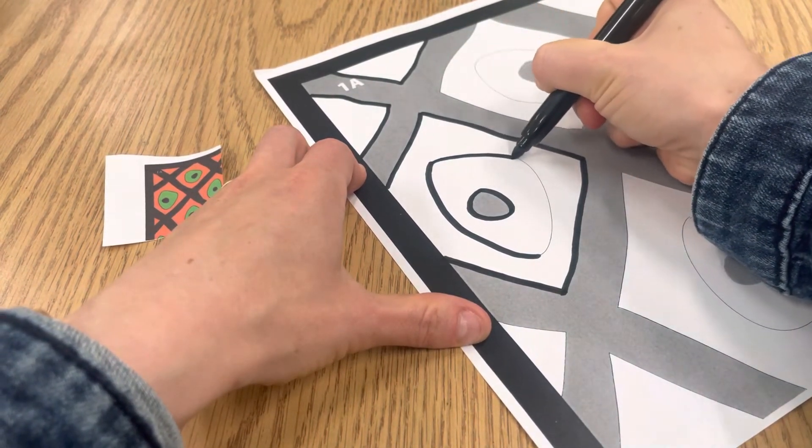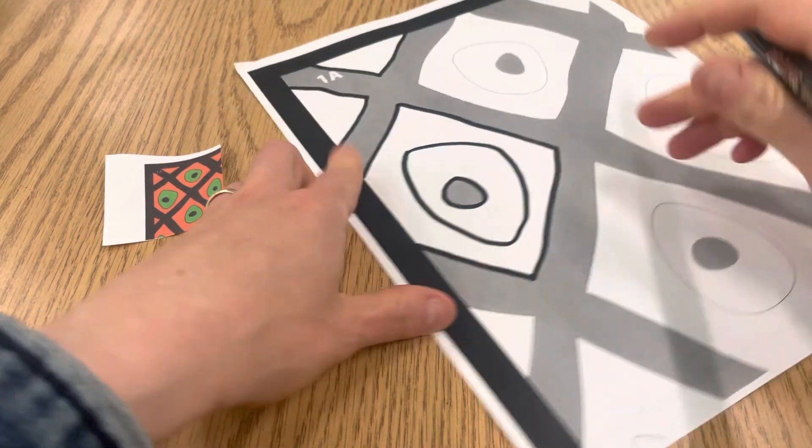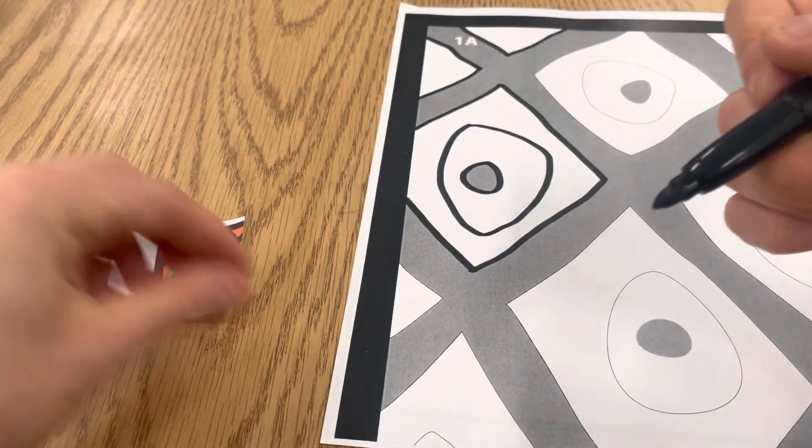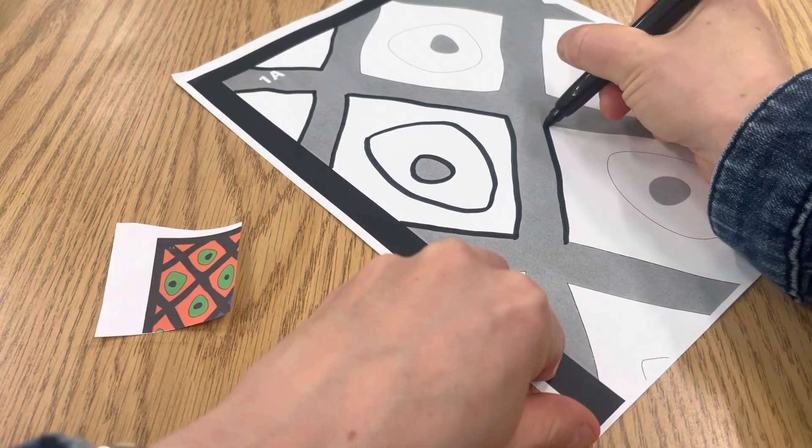When you're done doing that, you'll go back and color in the shaded part. See those black areas? You're going to color that in with your marker too. So take your time and do that first step.